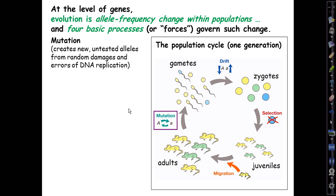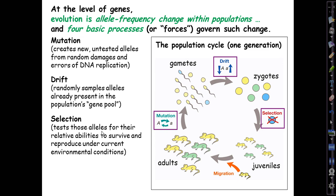Then there's genetic drift. It's the process that randomly samples alleles already present in the population's gene pool, possibly changing their frequencies. Then there's selection, natural selection, which tests those alleles for their relative abilities to survive and reproduce under current environmental conditions.